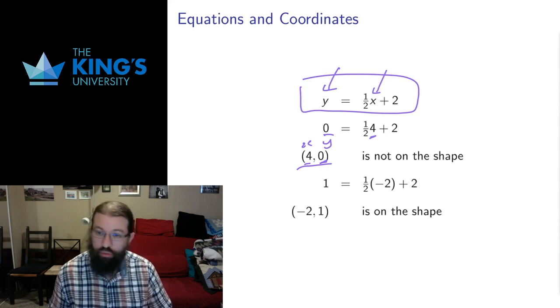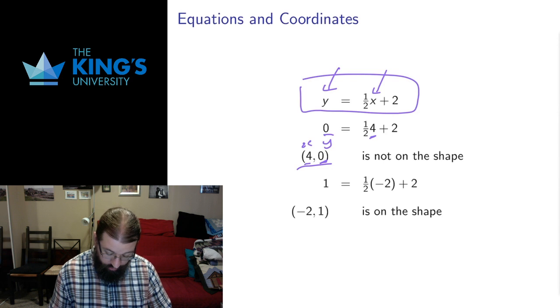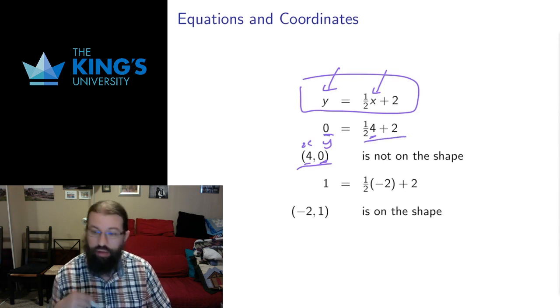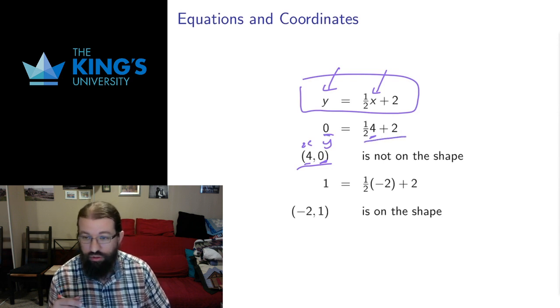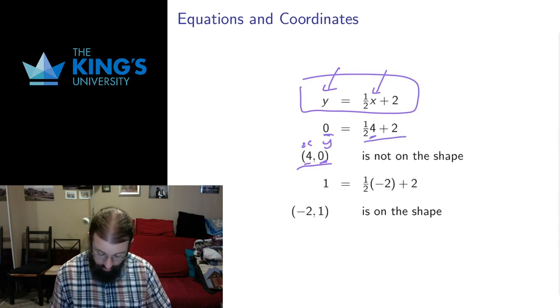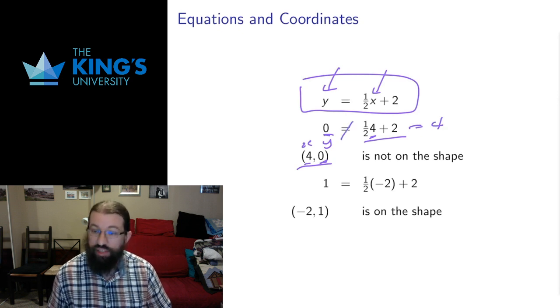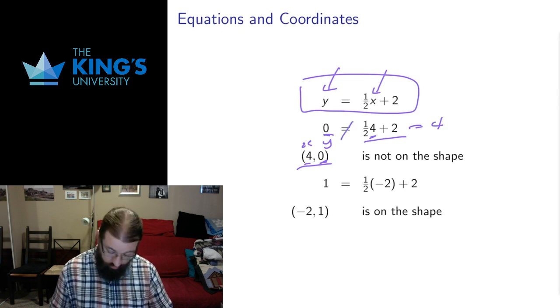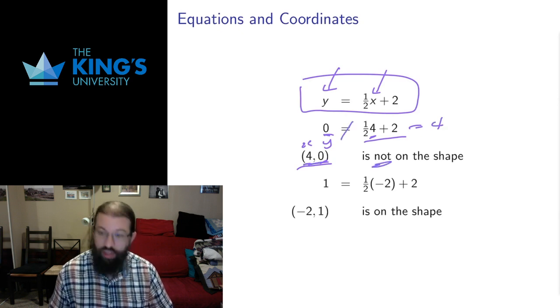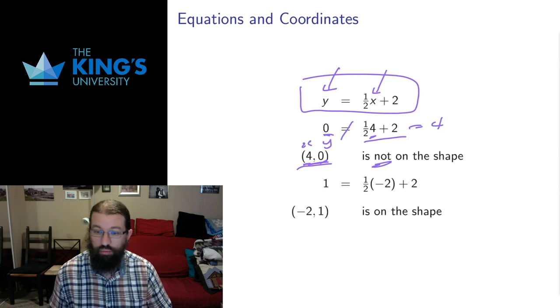If I use the point (0, 4), the left side is 0, and the right side: one half times 4 plus 2 is 2 plus 2, which equals 4. That's not equal, so that doesn't satisfy the equation, and the point is not on the shape.